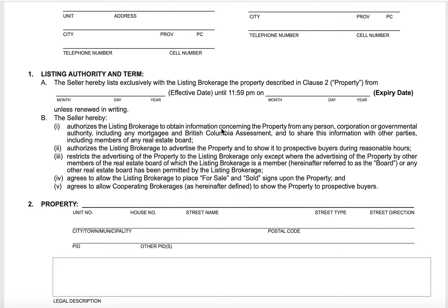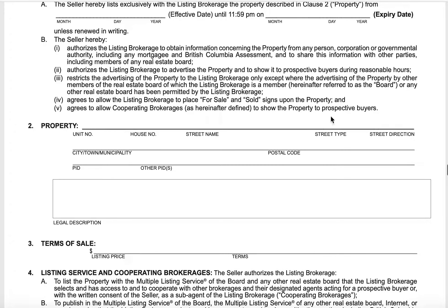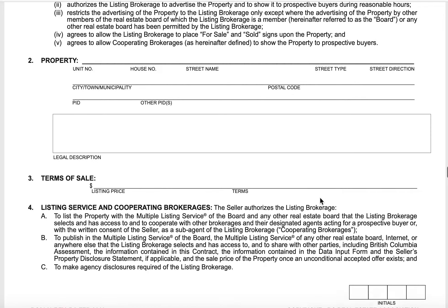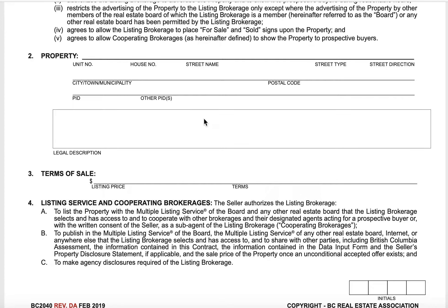There's a section for you to read. The next section will be the property information — your address, and the property identifier number I will get off of title, as will the legal description. The legal description is supposed to be written in exactly as seen on title, so I will pull the title first and write the legal description in exactly as it's written. Then, number three, we write our list price — what we're hoping to get. List prices are not guaranteed, so depending on our pricing strategy, we're going to have a number of possible outcomes, and we'll go through that when we sit down and actually write the contract.